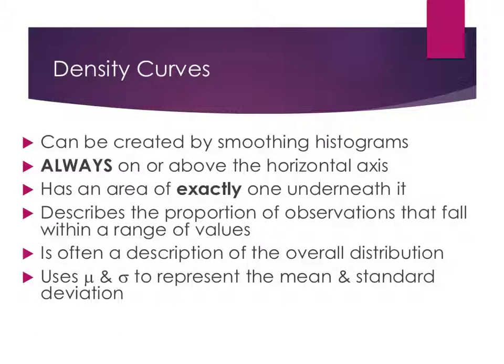A density curve is created by smoothing a histogram — that just means drawing a loose curve to fit your histogram, which you've seen me do with different types of graphs to describe shape and spread. Density curves are always on or above the horizontal axis, and they all have an area of exactly 1 underneath them, which will be important later when we discuss probabilities. These density curves describe the proportion of observations that fall within a range of values — that's a percentage number — and they are often a description of the overall distribution based on their shape, whether skewed, uniform, or symmetrical.